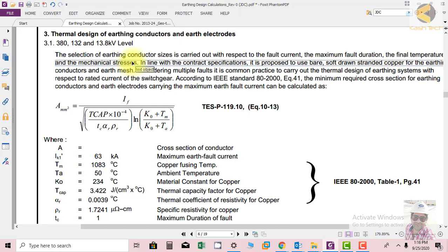One aspect is the current carrying capacity, another aspect is the temperature rise and thermal capacity, and the third, which is also most important, is the mechanical stress. When huge fault current is flowing through the earth mesh it will not only produce